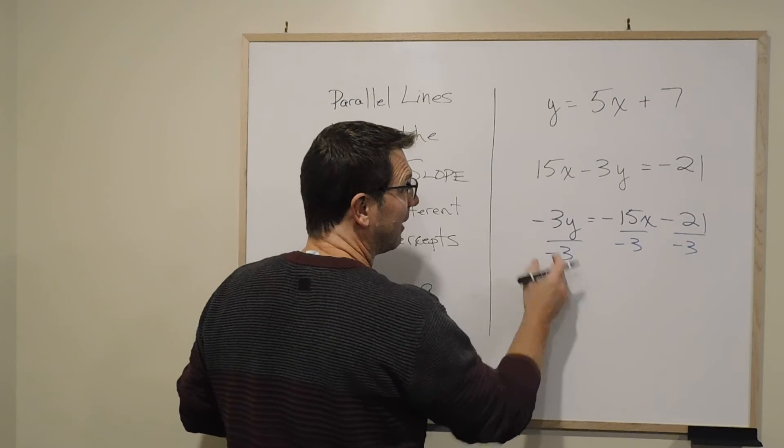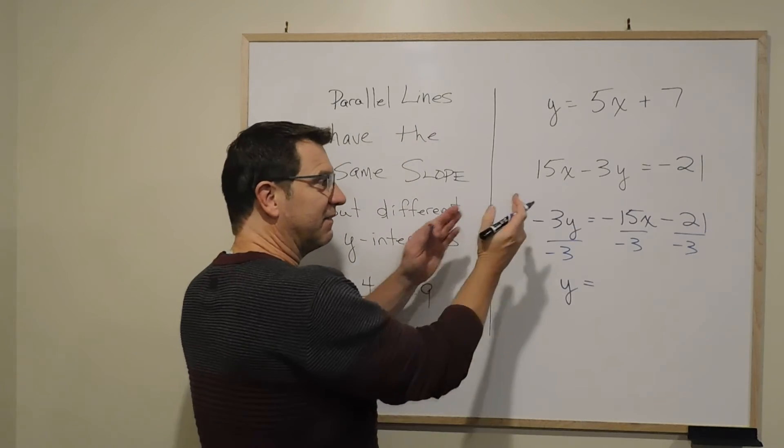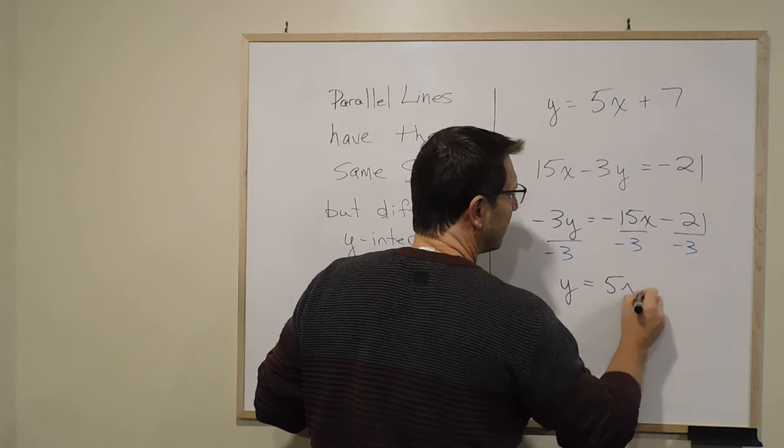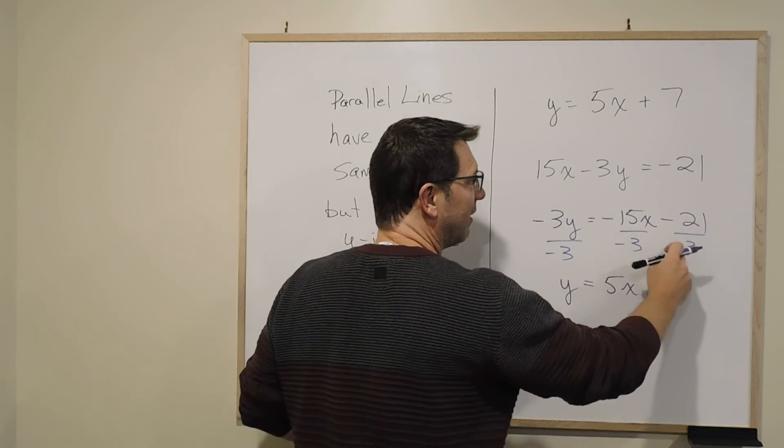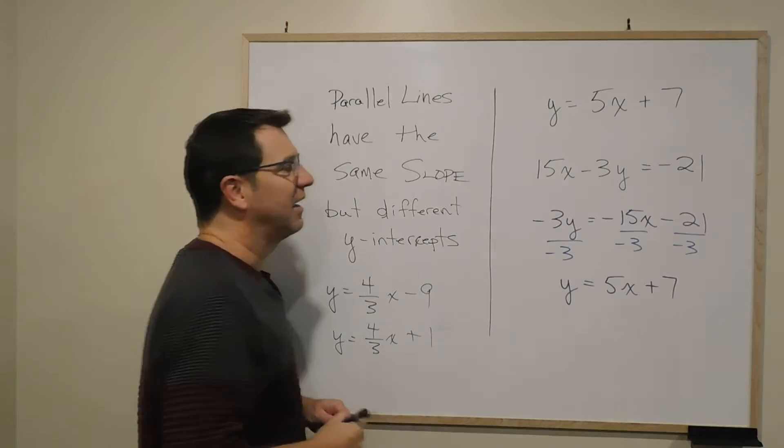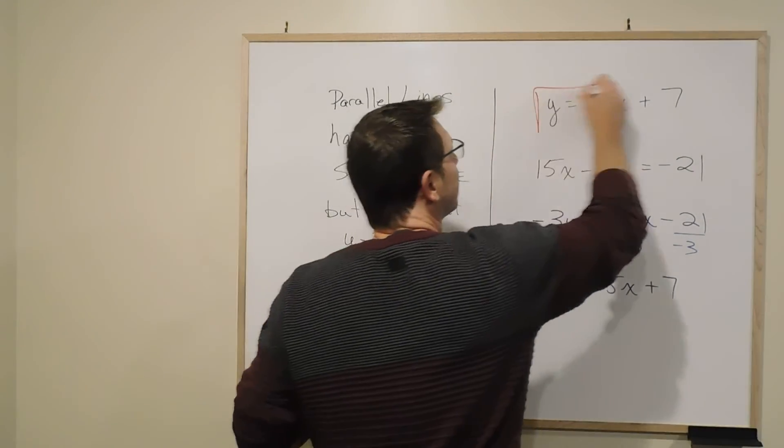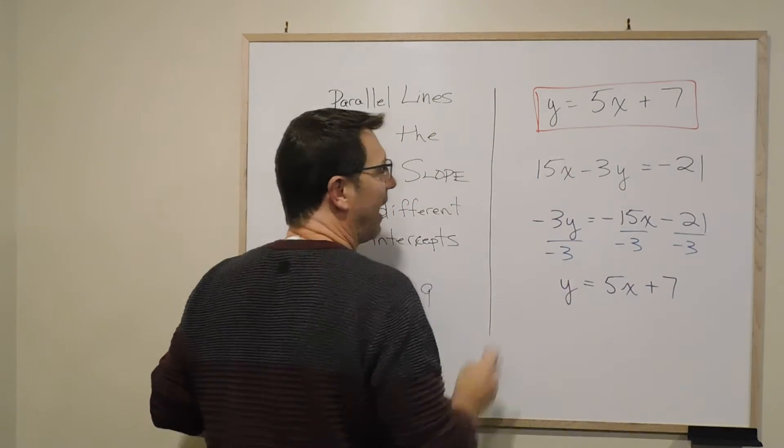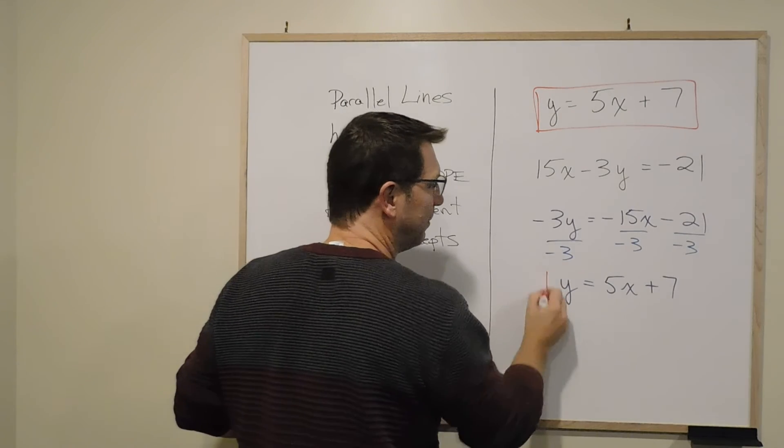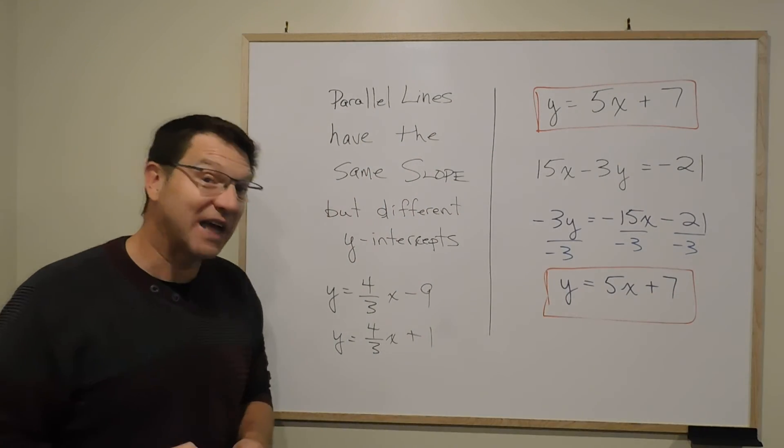So -3 divided by -3 is 1, giving us y. -15 divided by -3 is 5, giving us 5x. And -21 divided by -3 is positive 7. And then when we look at it, we say hold on—if I rearrange this line into y = mx + b, these lines are exactly the same.